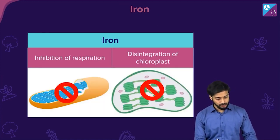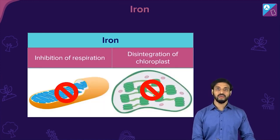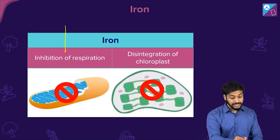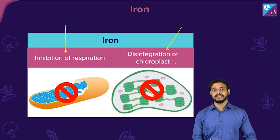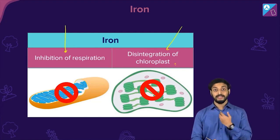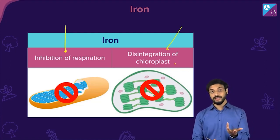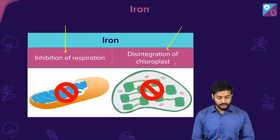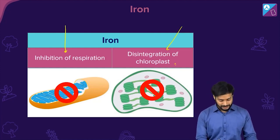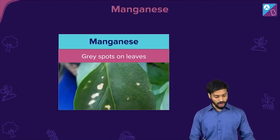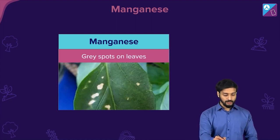Iron is very important. Its deficiency causes inhibition of respiration and disintegration of the chloroplast — both highly undesirable for the plant. Just as iron is important for us, it is essential for plants too.